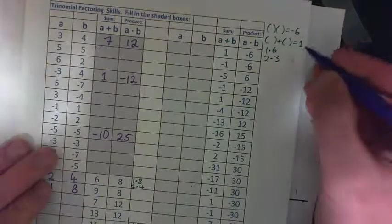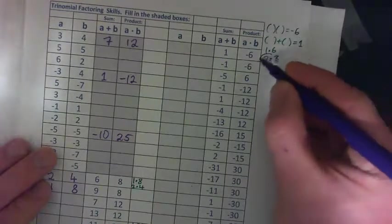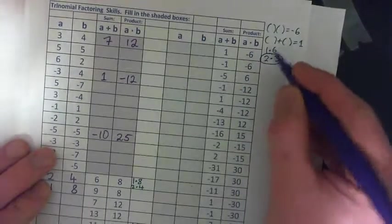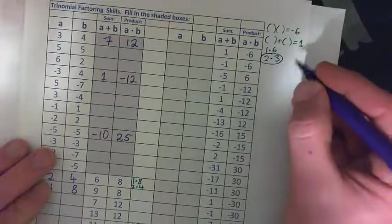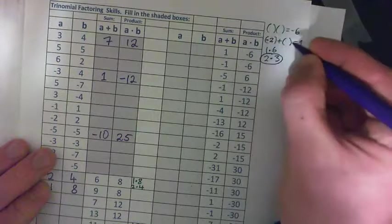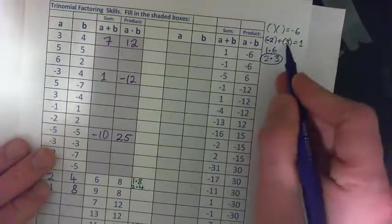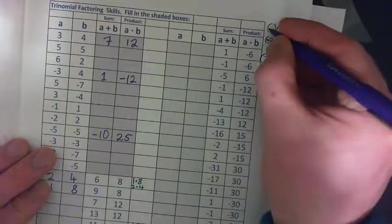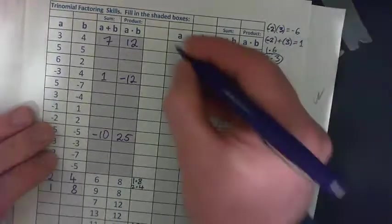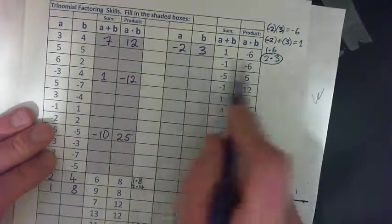Remember, you can put negatives on one of these. I like 2 and 3 because there's a difference of 1 between them — 1 and 6 have a difference of 5, that's not going to help. If you make the 2 a negative: negative 2 plus positive 3 is positive 1, and negative 2 times positive 3 is negative 6. So negative 2 and positive 3: add them to get positive 1, multiply them to get negative 6.